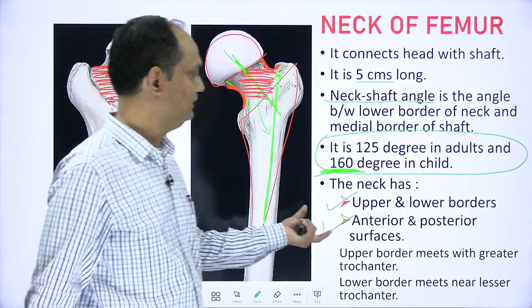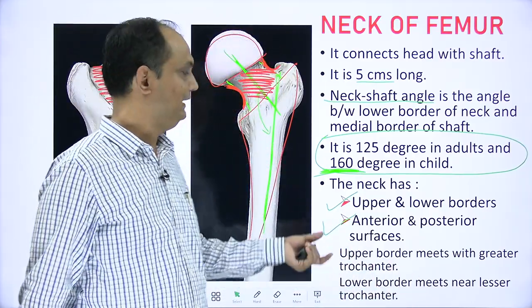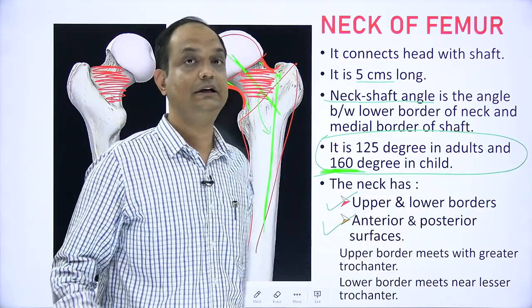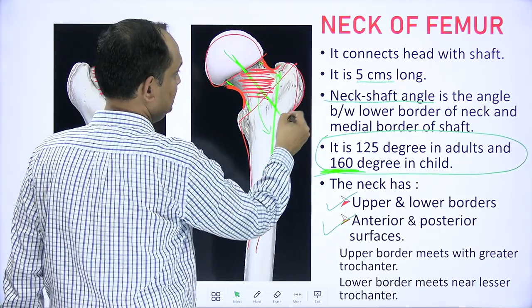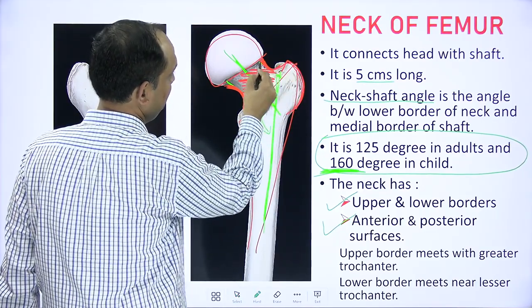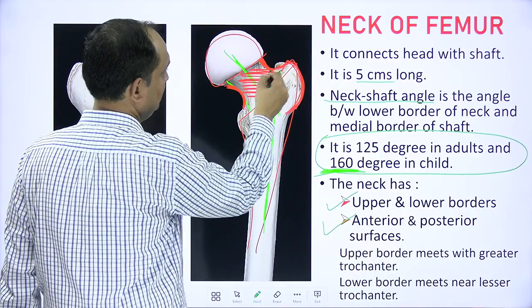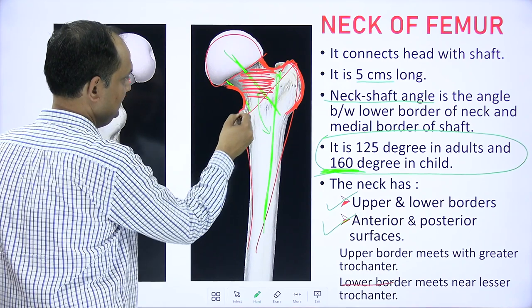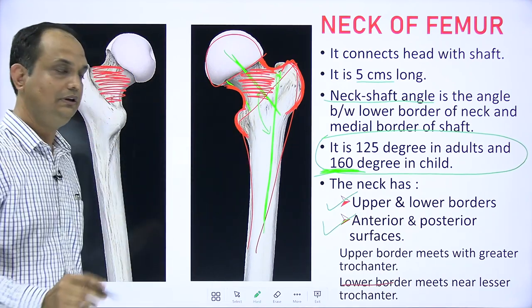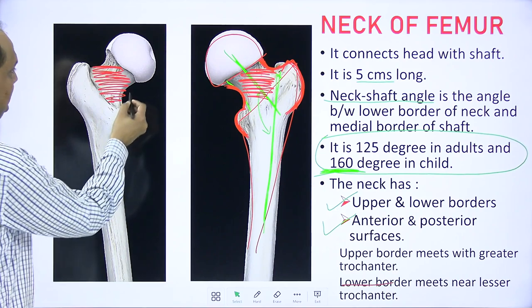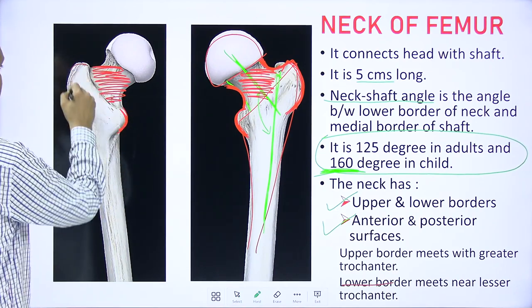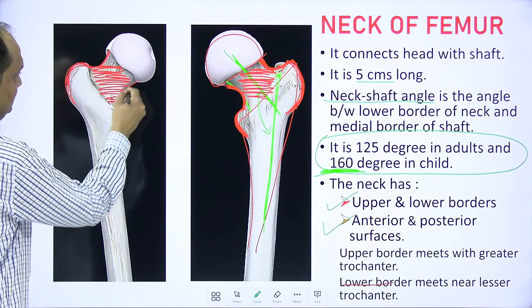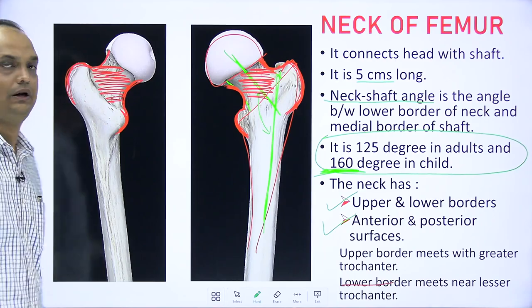The upper border of the neck meets with the greater trochanter, while the lower border meets with the lesser trochanter. In the posterior view, the upper border meets the greater trochanter and the lower border meets the lesser trochanter.